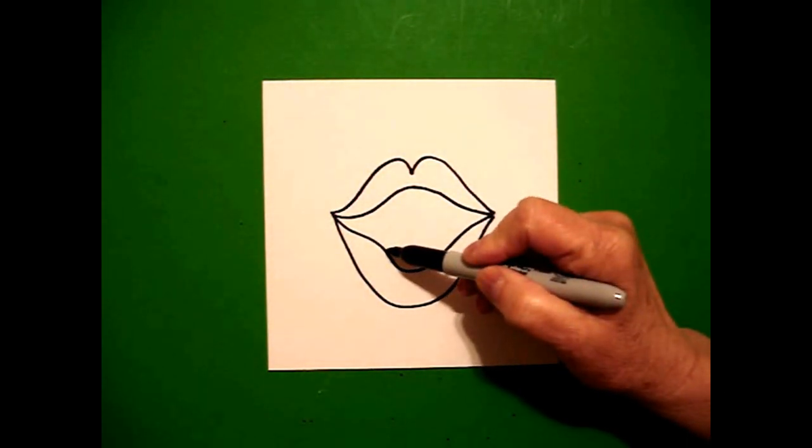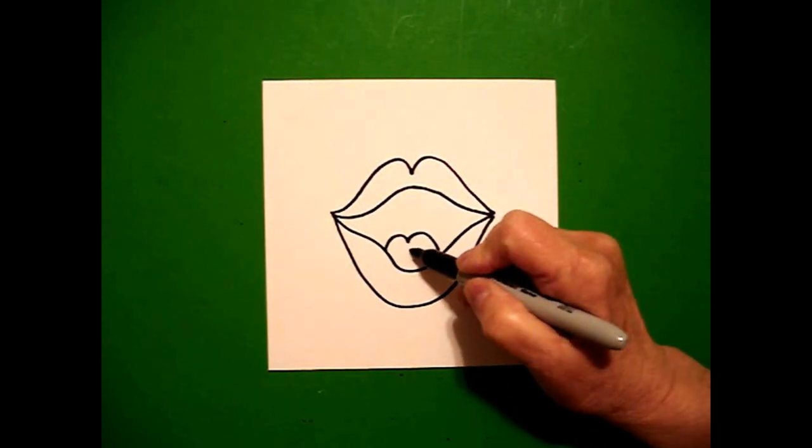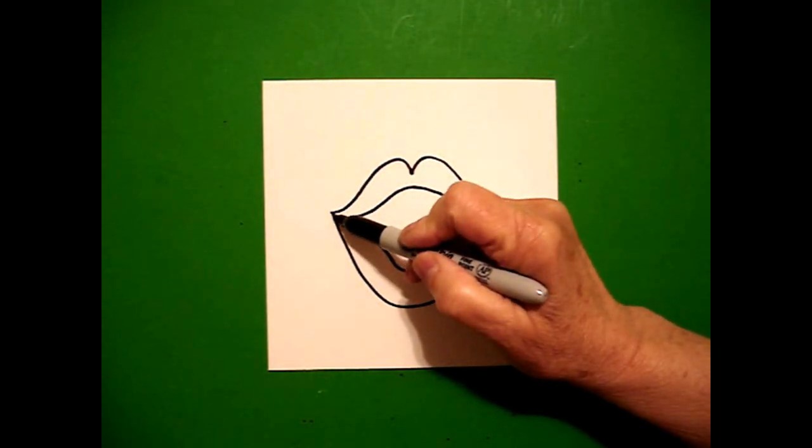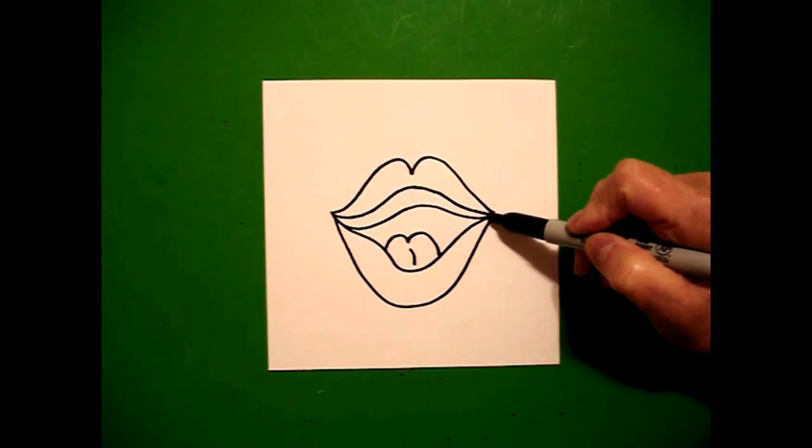I come right in the center and I draw one, two curve lines and I put a little curve line in the center. I come back to the left again and I draw a big curve line up, over, connect.